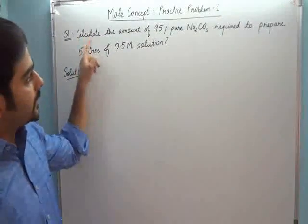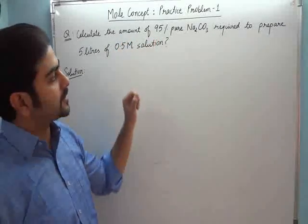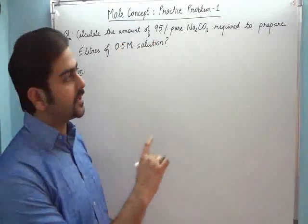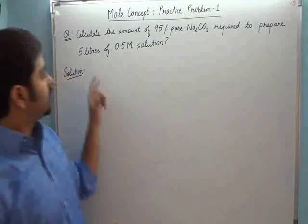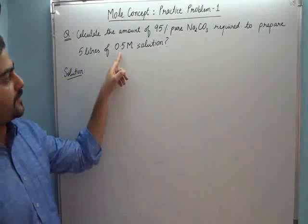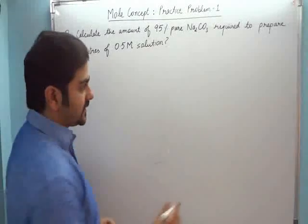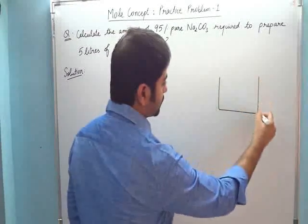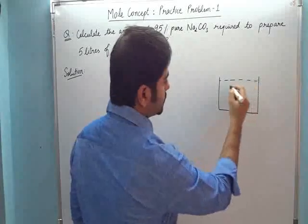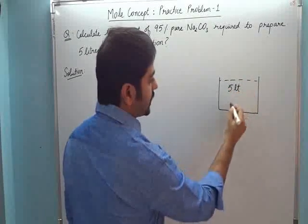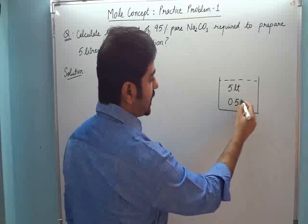First problem: Calculate the amount of 95% pure sodium carbonate required to prepare 5 liters of 0.5 molar solution. So first, let's understand the question. We have a solution—this solution should be 5 liters and the molarity should be 0.5 molar.